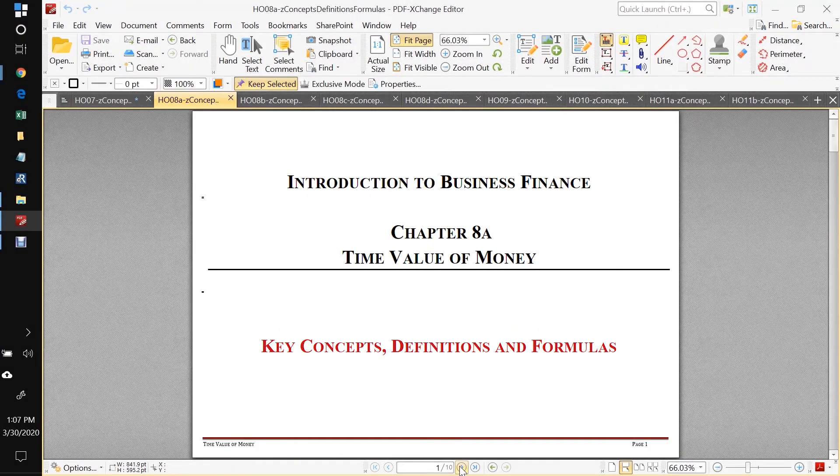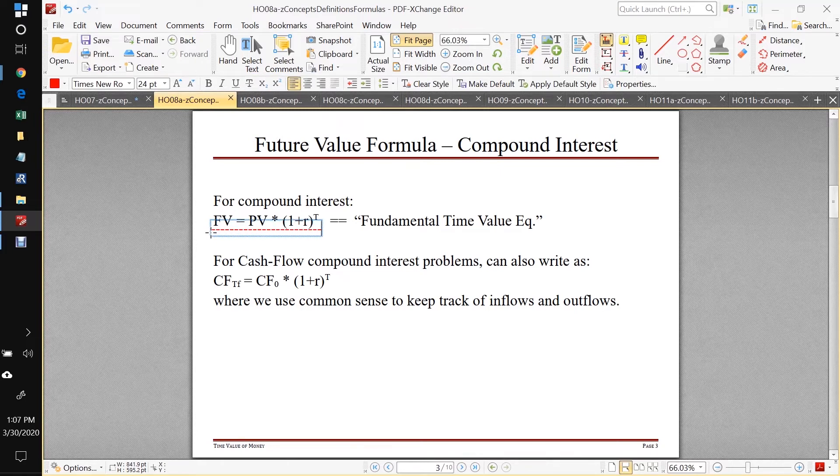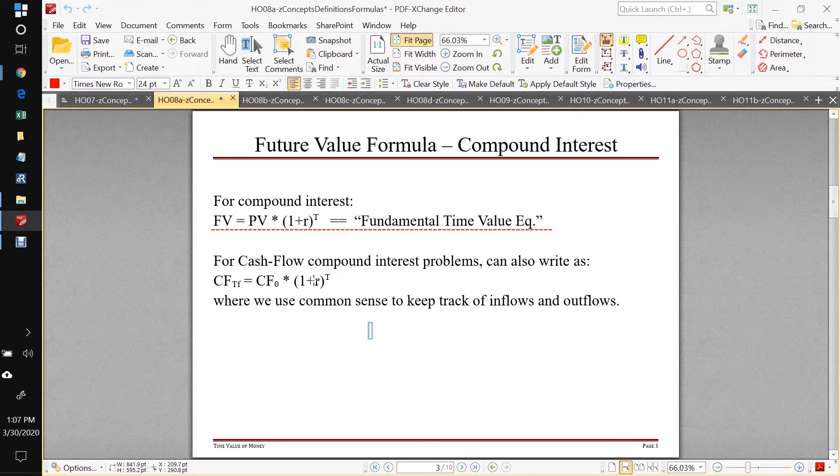Let's jump on to handout 8a. 8a was where we started out by deriving our fundamental time value equation, which says that the future value of cash is equal to its present value times 1 plus the interest rate, the interest rate that it's earning by, raised to the t where t is time elapsed.